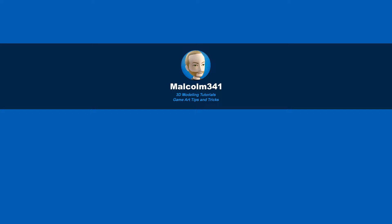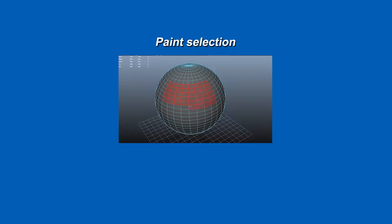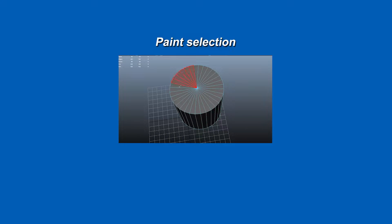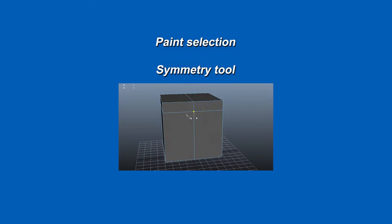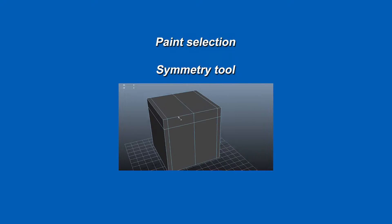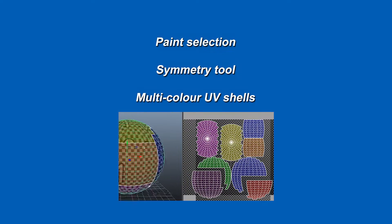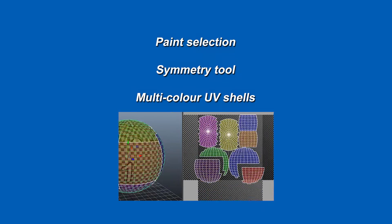Hey, this is Malcolm341. In this video, we're going to look at some Maya modeling tricks and secrets. Today we're going to look at paint selection and the hotkey for it, the symmetry tool and how to actually make it work, and how to colorize UV shells. So let's get into it.